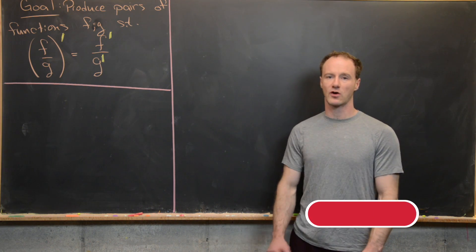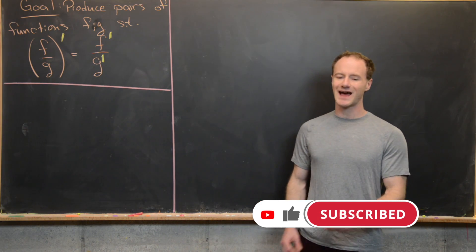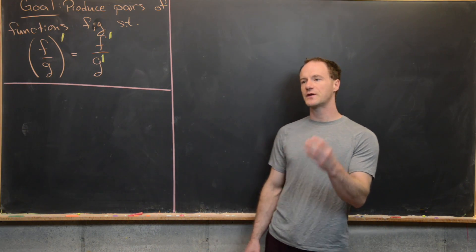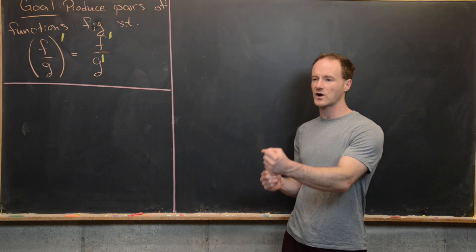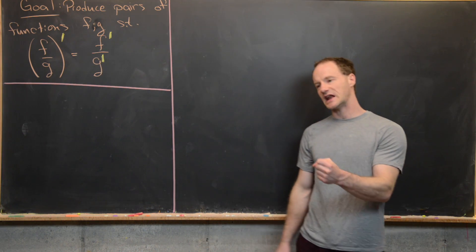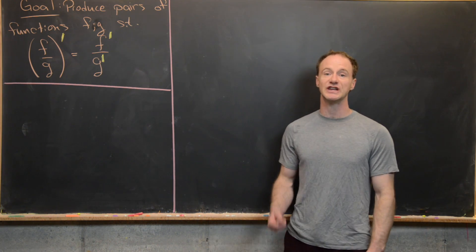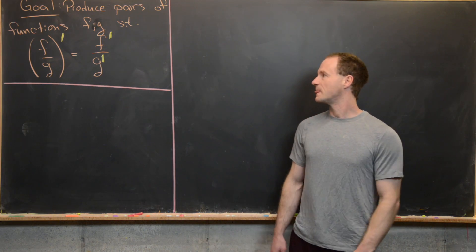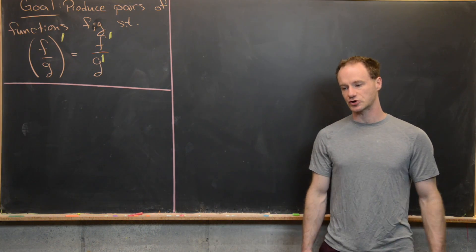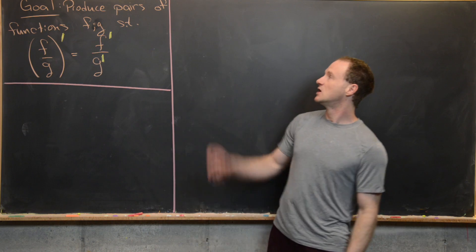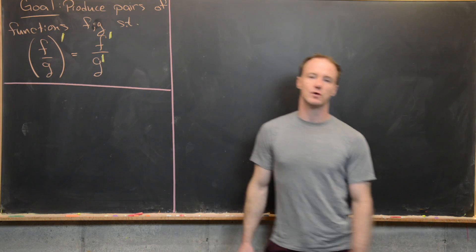This is a continuation of my better product rule video, and here we're going to look at the quotient rule. When I was a student I always had trouble remembering the quotient rule. I knew there was an f prime times g and an f times g prime in the numerator, but I always forgot which order they needed to be subtracted — was it f prime times g minus f times g prime, or the opposite? I could always remember the g squared in the denominator, but the order of the numerator was hard. So maybe a little game we can play is to look for pairs of functions f and g so that a really nice quotient rule works.